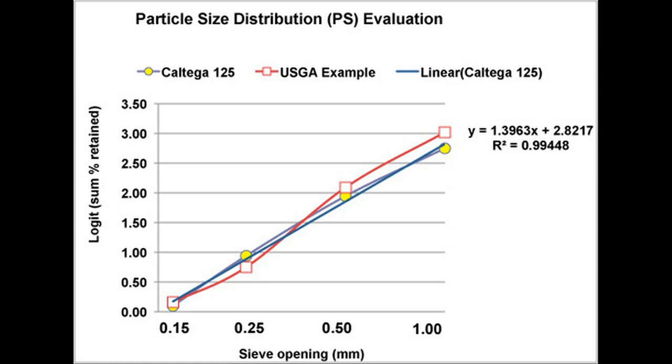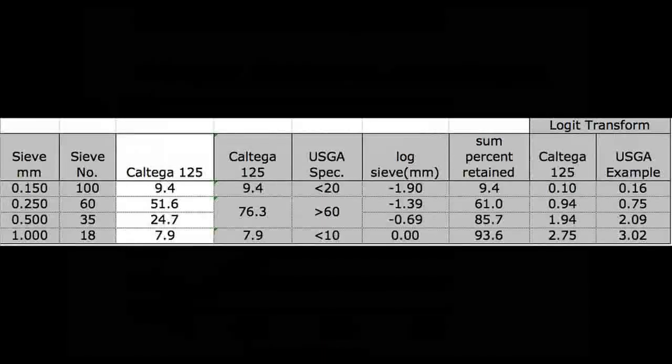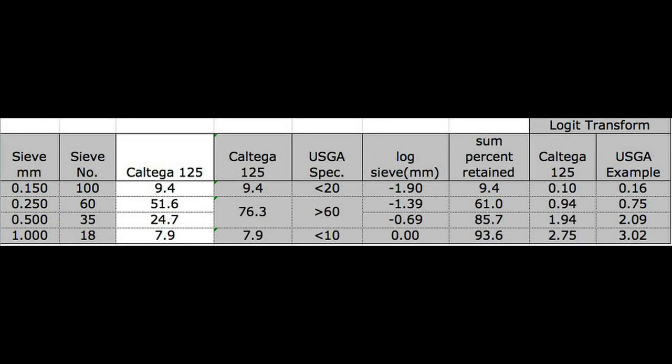Well, let's take a look at a few good performing and moderately well-performing sands. In this case, this is the Caltega 125. It's a product from a Southern California supplier. You can see that the line looks very nice. The slope is 1.4 and the R-square is 0.99. So it's a nice tight line and it fits those guidelines that we're looking for better than 1.2 on the slope and better than 0.95 on the R-square. Now let's take a look at the spreadsheet to see how the data performs. As we look down the USGA specs, we can see that we want less than 20% on the 0.15 mm, and we've got 9.4% on the Caltega 125. If you look at the combination of the 0.25 and 0.5 mm particle sizes, we need to have greater than 60% and it reports 76%. And for the 1mm particles, we need less than 10% and the report is 7.9%. So it falls right into USGA specs from all those parameters.